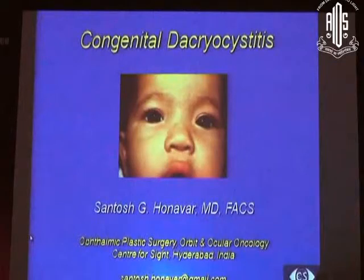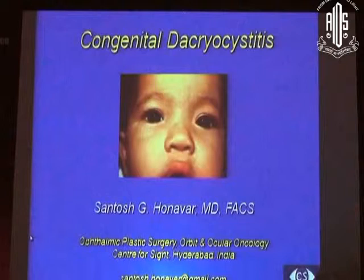In a child with epiphora, we have to start looking right from the eyelashes, because children can have canalicular entropion, epiblepharon, and distichiasis as causes of pseudo-epiphora. We also need to start looking at the puncta for punctal abnormalities.